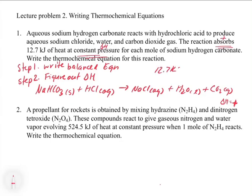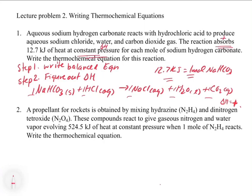The problem states 12.7 kilojoules per one mole of sodium hydrogen carbonate. We check that the equation is balanced: one Na on each side, two H on each side, one carbon each side, three oxygens each side — balanced. Since the coefficient is 1 for NaHCO₃, the ratio is correct, so delta H = +12.7 kilojoules.